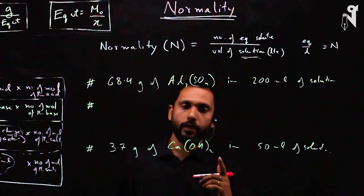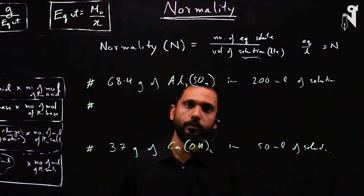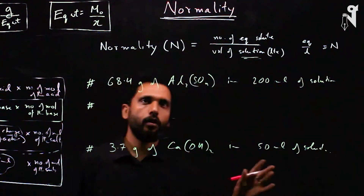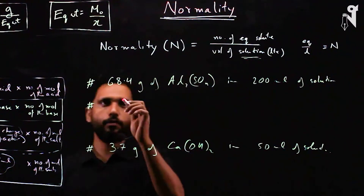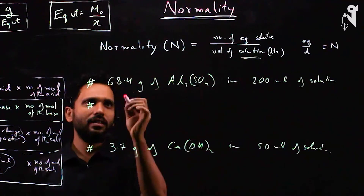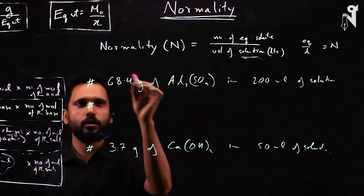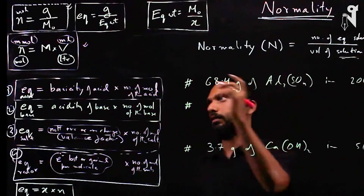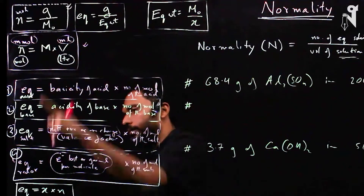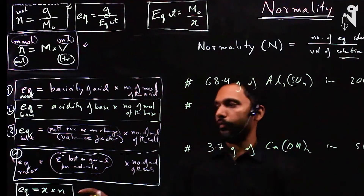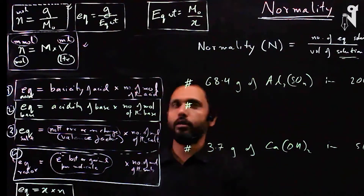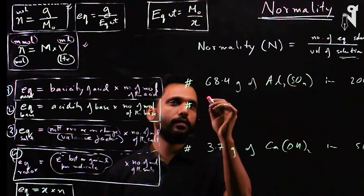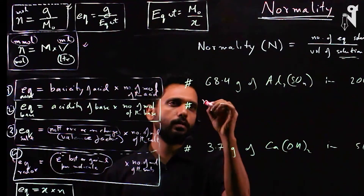Find the normality and also find the molarity for the calcium hydroxide problem. Let's solve the first one. Grams alone won't help much — what helps is the number of moles and number of equivalents. If you get the number of moles, you're almost there.